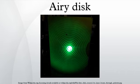The diffraction pattern resulting from a uniformly illuminated circular aperture has a bright region in the center, known as the Airy disc, which together with a series of concentric bright rings around it is called the Airy pattern. Both are named after George B. Airy.